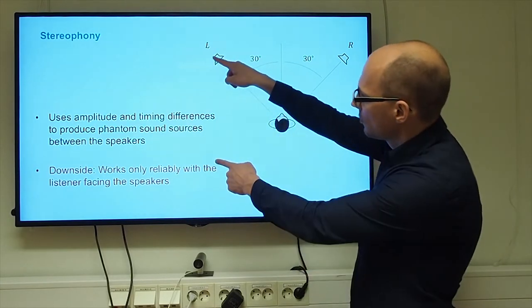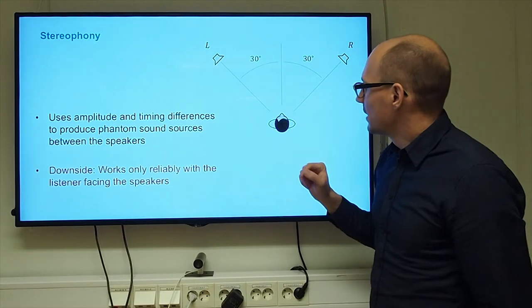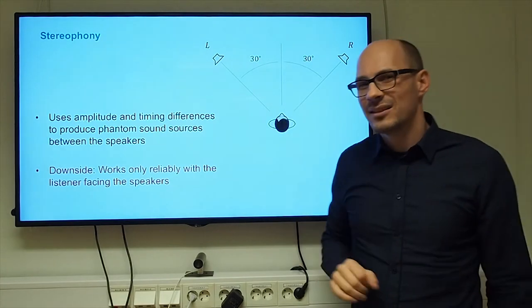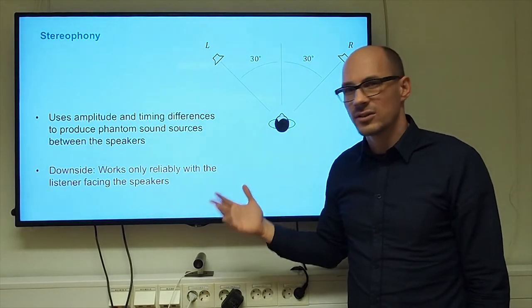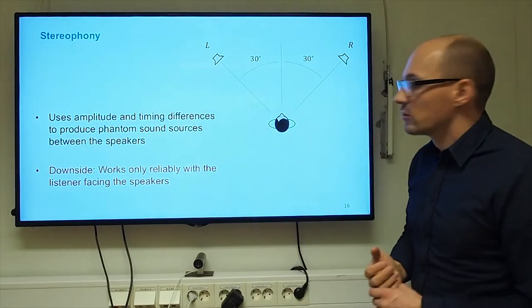You could, of course, have more loudspeakers and then do pairwise panning. But as I've mentioned, the orientation of the listener is very important. So if you do panning between two loudspeakers that are lateral to the user, it will not work as reliably.